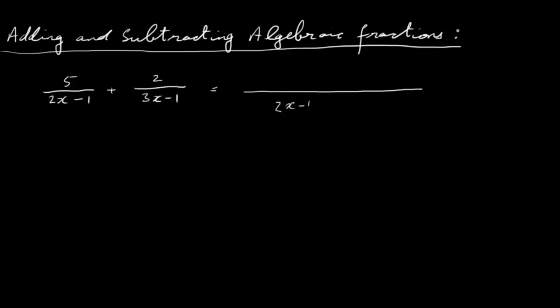So we're going to write 2x minus 1 and multiply that by 3x minus 1. That always works. For example, if you have 2 thirds plus 3 fifths, you can just multiply 3 by 5 and you'll get 15. This will always give us a lowest common multiple that works.